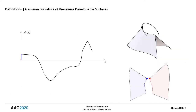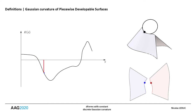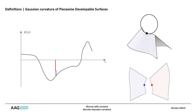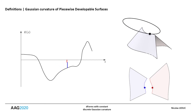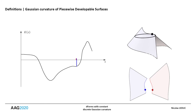We illustrate the previous result by varying the point P along the seam. Each face, by its geodesic curvature, contributes to the Gaussian curvature. The values of geodesic curvature of the left surface (in blue) and the right surface (in red) are plotted on the graph to give the Gaussian curvature.